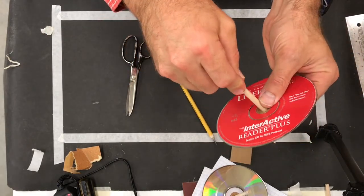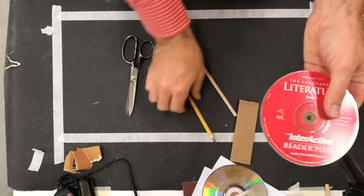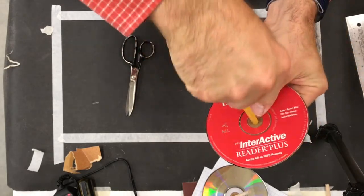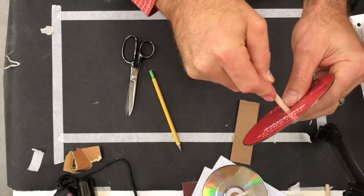We want this to be a tight fit so that it stays on. And that, not quite there yet. So I need to go a little bit further. Twisting the pencil as you do this helps a little bit. And there we go.